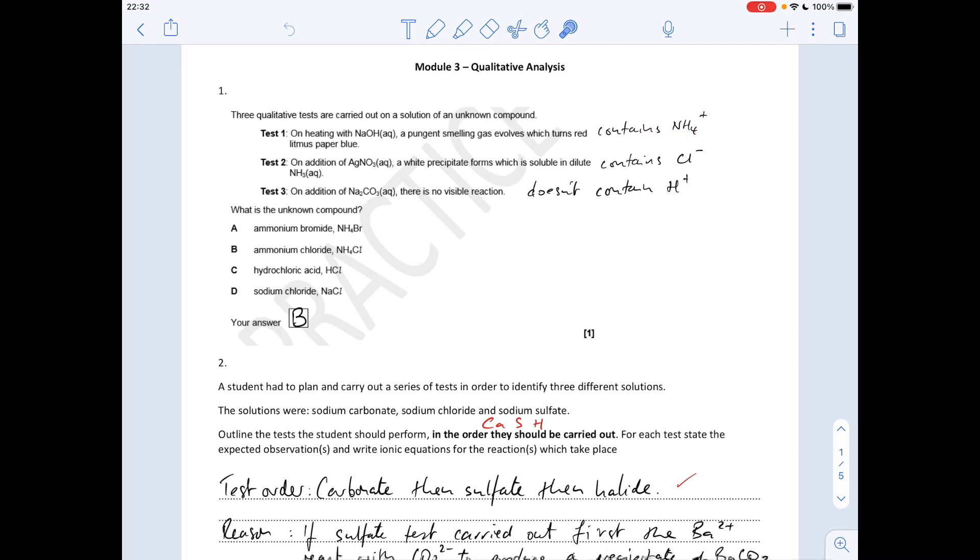Test two: they've added silver nitrate solution, white precipitate forms which is soluble in dilute aqueous ammonia, so it tells you it contains chloride ions. Test three: they've added sodium carbonate solution and there's no visible reaction, no bubbles basically, and that means it's not an acid so it doesn't contain H⁺ ions. So the compound is ammonium chloride, option B.